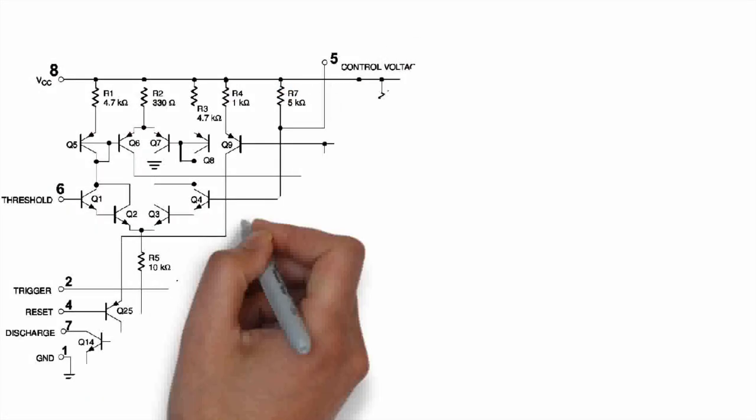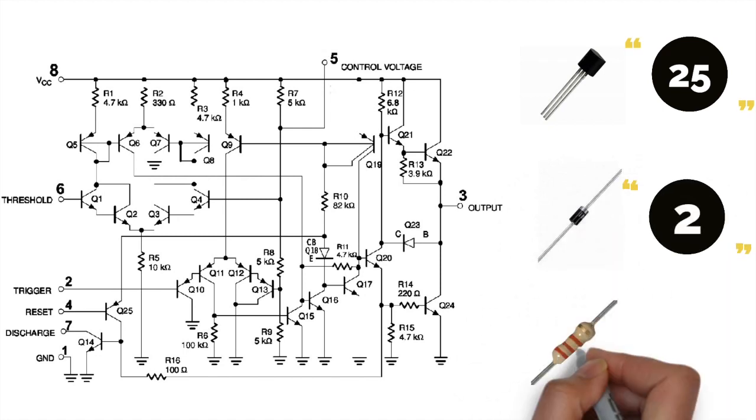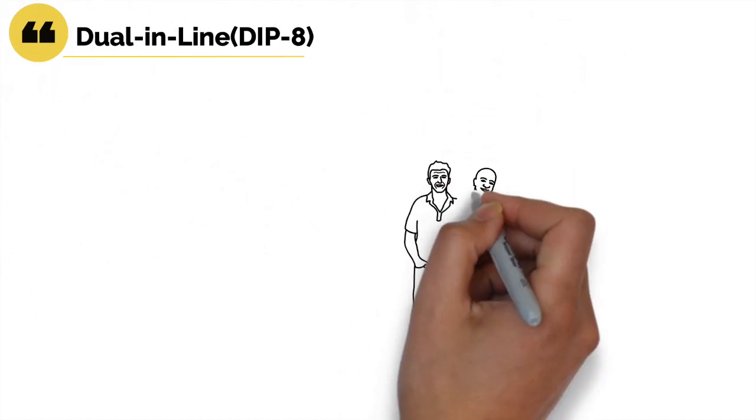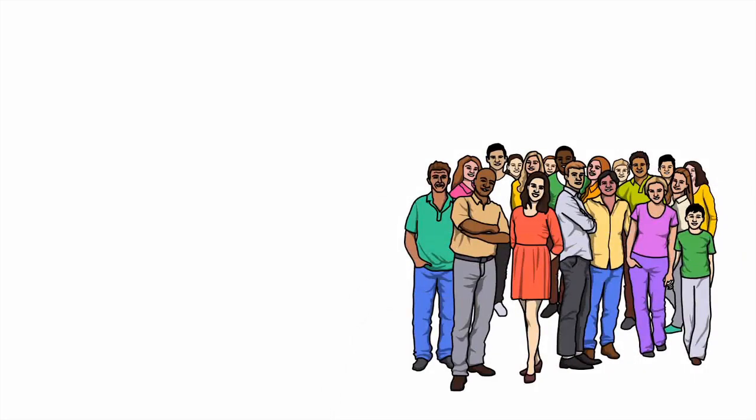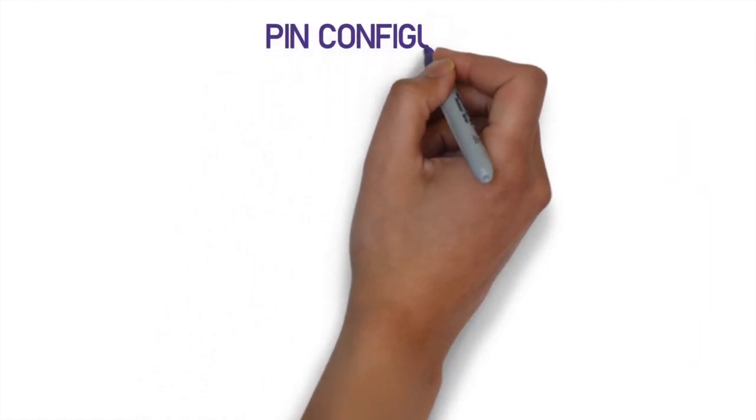Depending on the manufacturer, the standard 555 timer package includes 25 transistors, 2 diodes and 15 resistors on a silicon chip installed in an 8-pin mini dual inline package which is termed as DIP-8. Variants consist of controlling multiple chips on board. However, 555 timer is still a most popular one. Let us look at the pin diagram to have an idea about the timer IC.